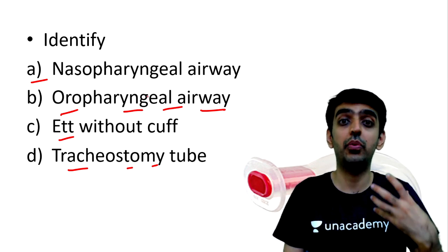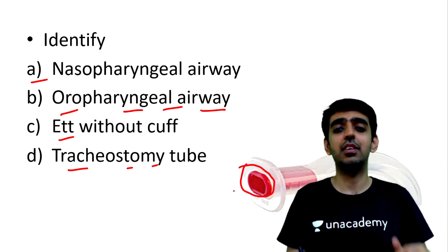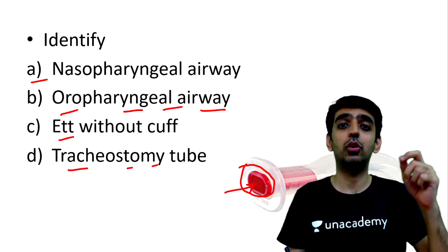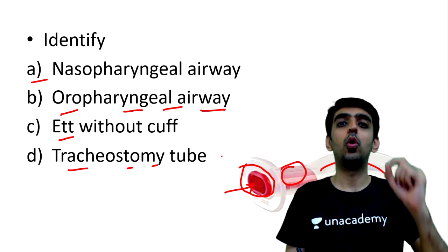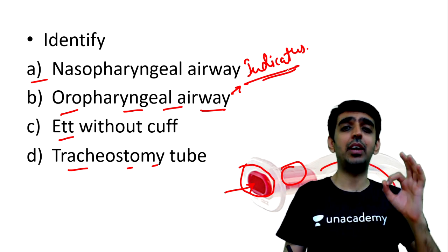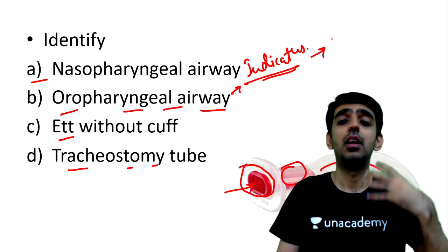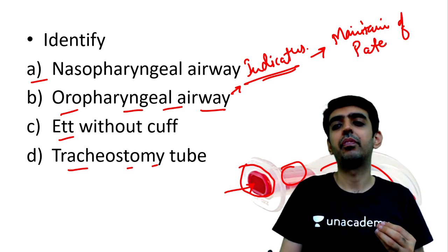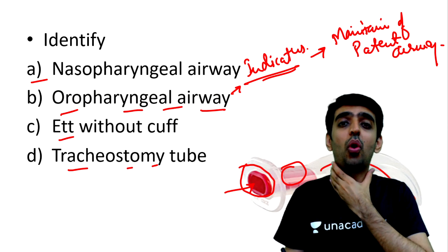Let's look at the parts of the oropharyngeal airway. You can see the flange, the hollow airway channel through which air passes and suctioning can be done, the bite block, and the tip. The basic indication for using this airway is maintenance of a patent airway — used when a patient fails to maintain the airway.